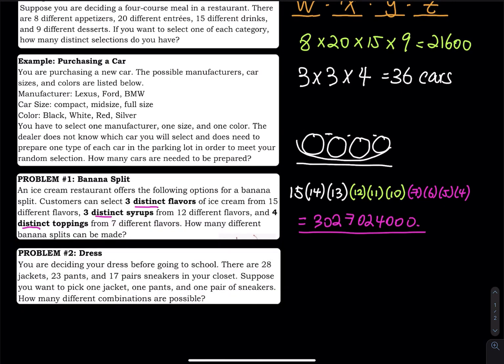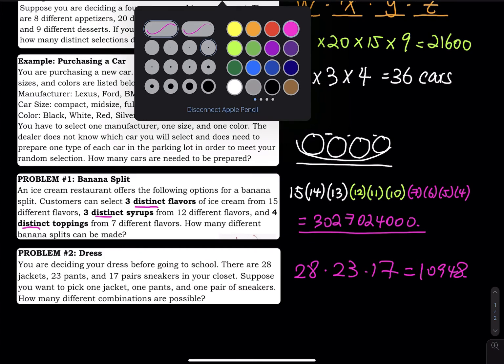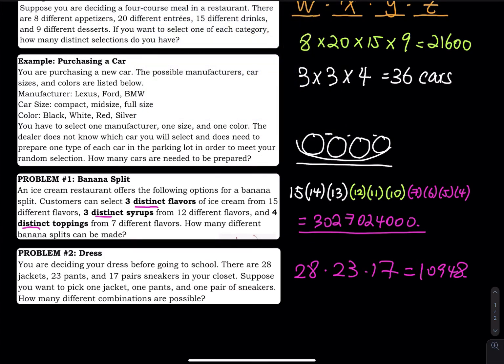You are trying to decide your outfit before going to school. You have 28 jackets, 23 pants, and 17 pairs of sneakers. You pick one of each, so the total is 28 times 23 times 17. Now, what if today is super cold and you need to pick two jackets? You can't pick the same jacket twice, so that's 28 choices then 27. So the total becomes 28 times 27 times 23 times 17.